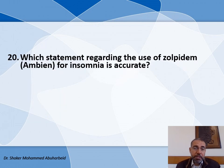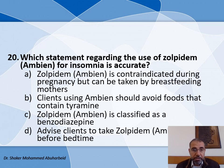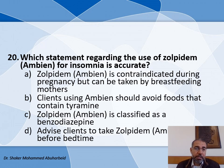Question number twenty: Which statement regarding the use of Zolpidem for insomnia is accurate? The choices are: A) Zolpidem is contraindicated during pregnancy but can be taken by breastfeeding mothers — false. B) Clients using it should avoid foods containing tyramine — false. C) Zolpidem is classified as a benzodiazepine — also false. D) Advise clients to take Zolpidem just before bedtime. So D is the correct answer.